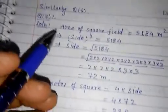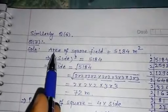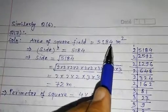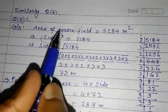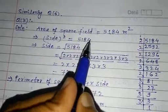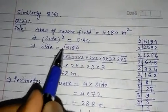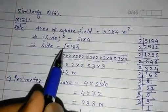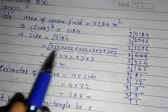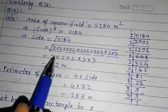Here area of square field is given 5184. So we know that area of square equal to side square equal to 5184. So side equal to square root. Now we can find its square root by the prime factorization method, and while grouping the factors we see that its value is 72.